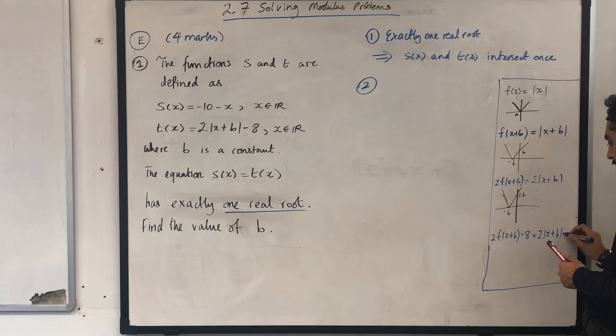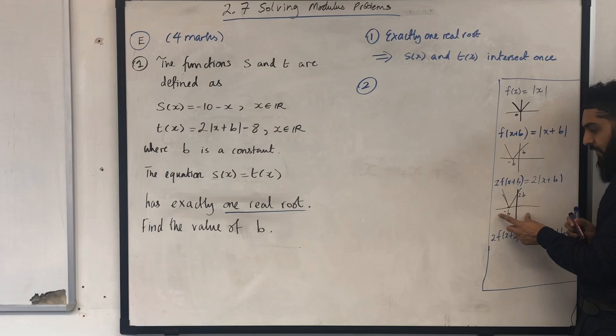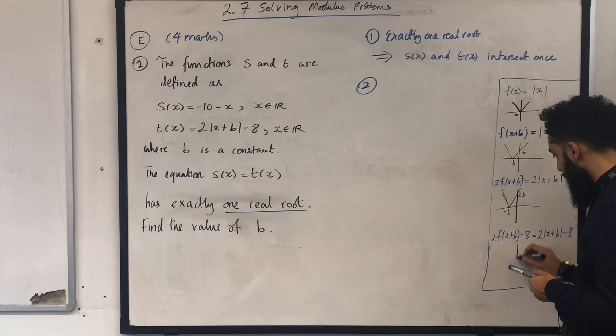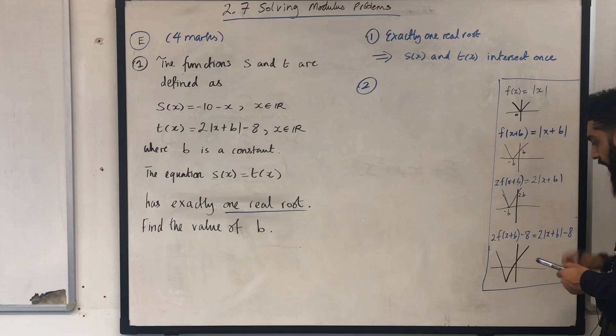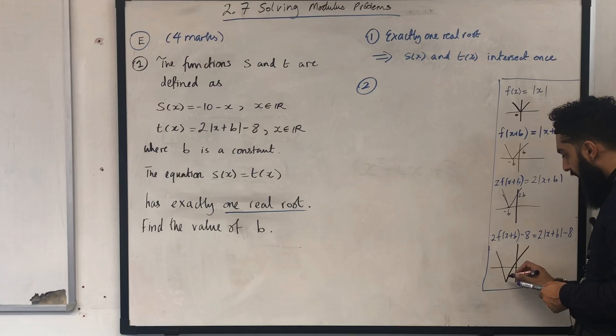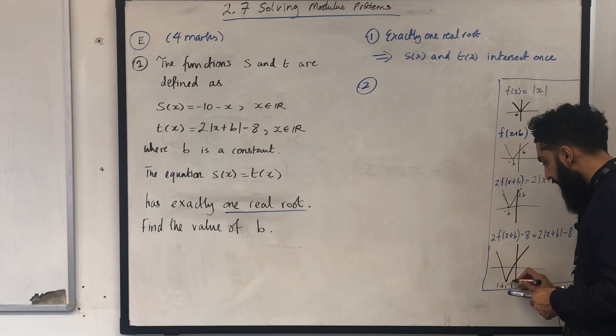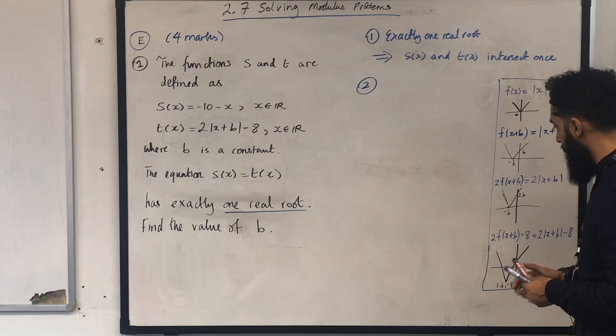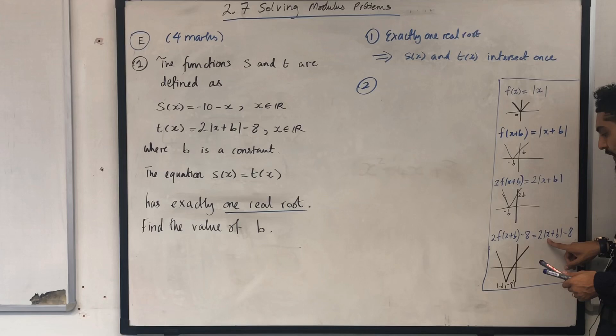To get this graph, all I have to do is take the previous graph and shift it 8 units downwards. The vertex of this graph has coordinates minus b and minus 8. To work out the y-intercept I substitute x equals 0, giving 2 modulus of b which is 2b minus 8.